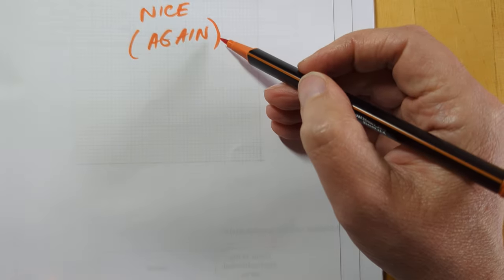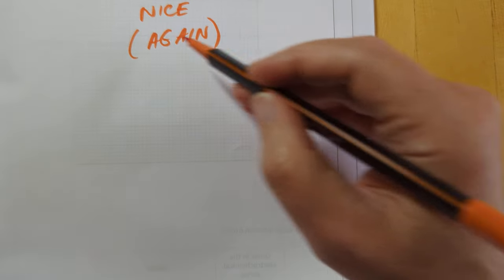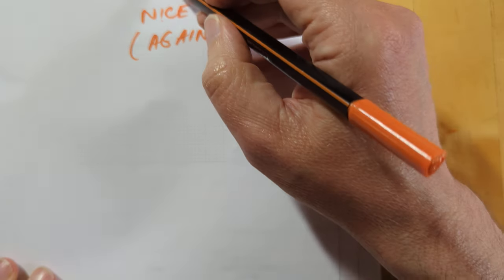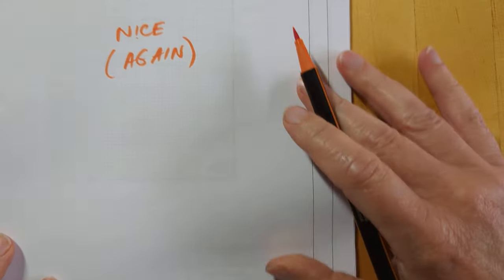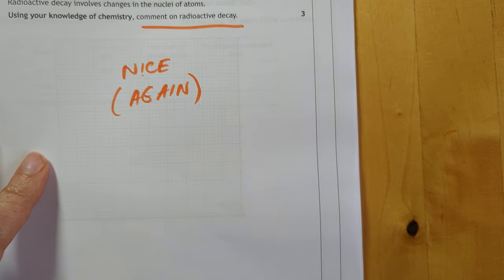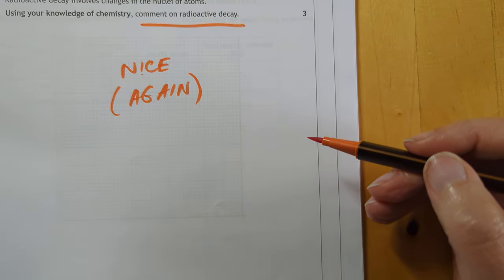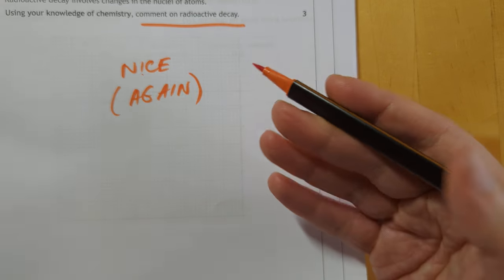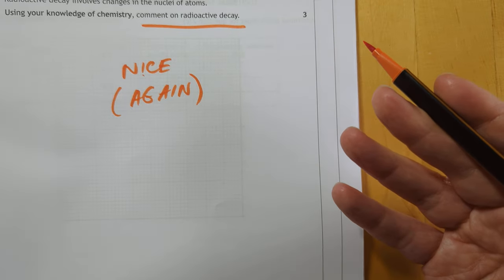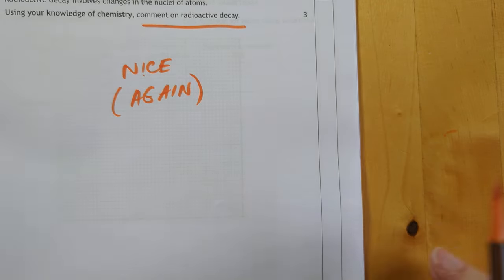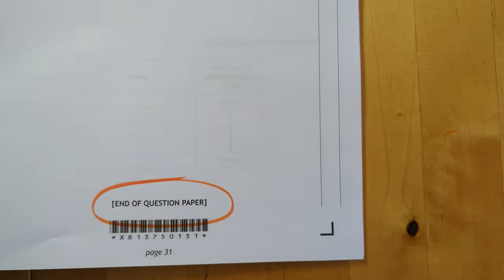Second and last question is our open-ender, which is a nice one. Again, radioactive decay, you can talk about any three points here in radioactive decay you like. You can do alpha, beta, gamma. You can talk about half-lives. You can talk about how to stop alpha and beta and gamma. So they are a gift, the two open-enders in this. And that's the end of the paper. Bye-bye.